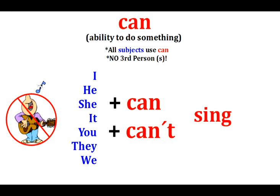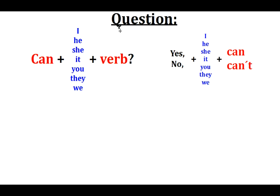For the question, remember, can is an auxiliary verb. So we start the question with can: can, subject, and the verb. This is a yes/no question.